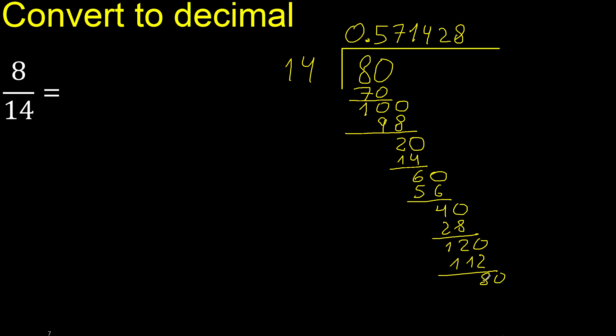Complete 80. 14 multiply by 5 is 70, subtract. Complete 100. 14 multiply by 7, subtract.